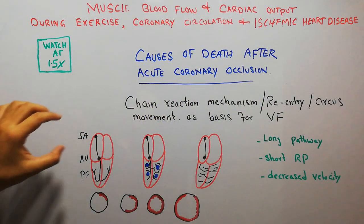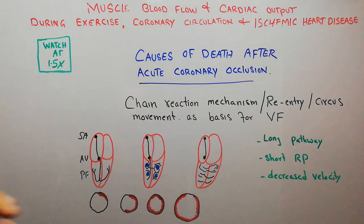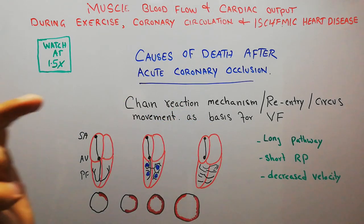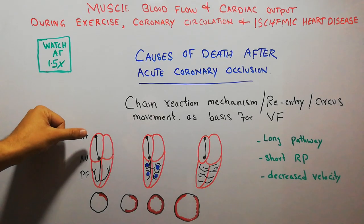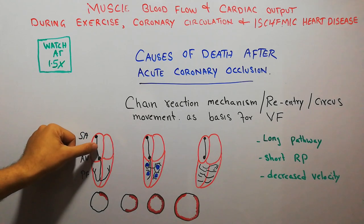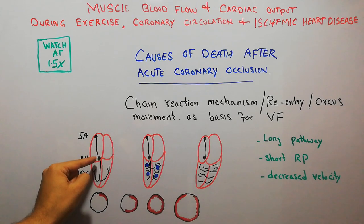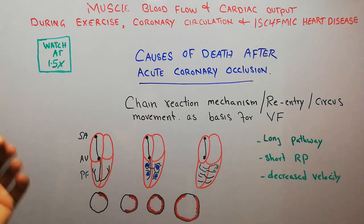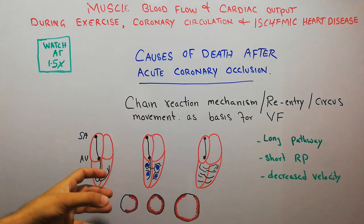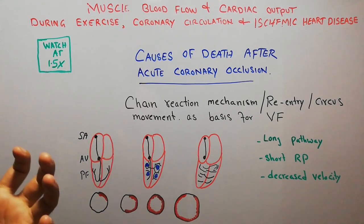We initially need to understand the normal conduction of the heart and the normal conduction of the impulse in the heart, and then we will understand what are the causes of ventricular fibrillation. Normally in a normal heart, the impulse starts in the SA node, it activates the atria, the atria contracts, then the impulse is delayed a little bit in the atrioventricular node, then it goes into the Purkinje fibers and into the ventricles, and then the ventricles contract. This leads to coordinated contraction of the ventricular muscles.